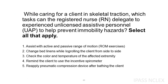While caring for a client in skeletal traction, which tasks can the registered nurse, RN, delegate to experienced unlicensed assistive personnel, UAP, to help prevent immobility hazards? Select all that apply. 1. Assist with active and passive range of motion, ROM, exercises. 2. Change bed linens while logrolling the client from side to side. 3. Check the color and temperature of the affected extremity. 4. Remind the client to use the incentive spirometer. 5. Reapply pneumatic compression device after bathing the client.